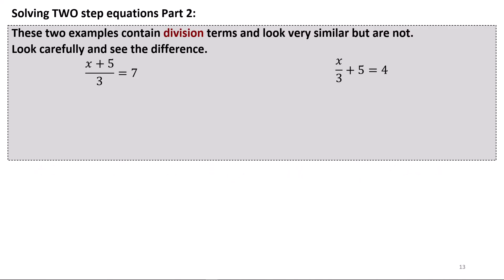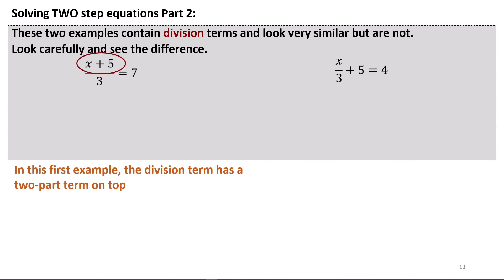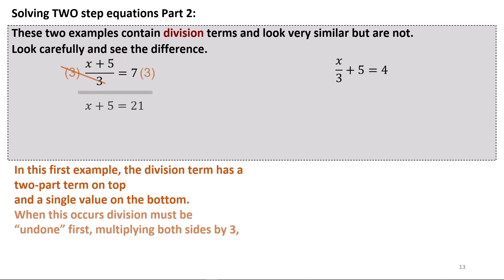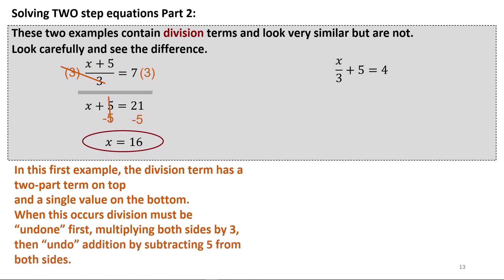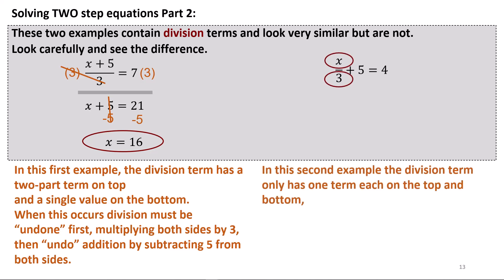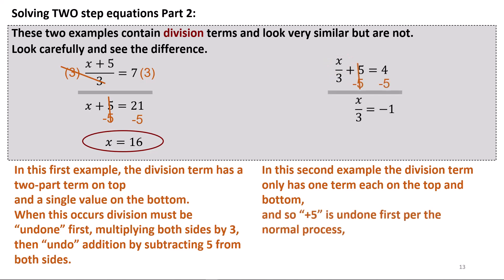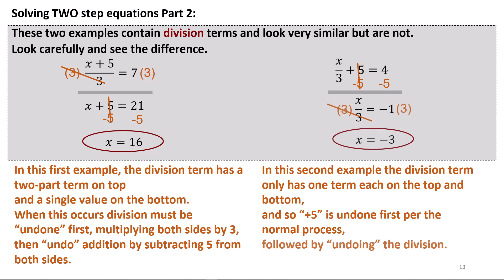Sometimes you will see two-step equations that contain division terms that look similar but are not. Look carefully at the difference. In the first example, the division term has a two-part term on top and a single value on the bottom — division must be undone first by multiplying both sides by 3, then undo addition by subtracting 5. In the second example, the division term has one term each on top and bottom, so plus 5 is undone first per the normal process, followed by undoing the division.